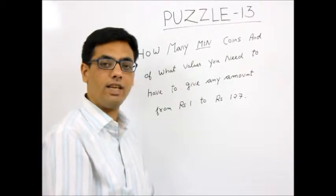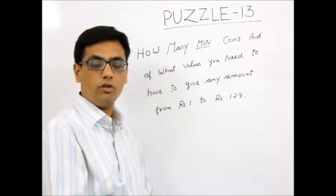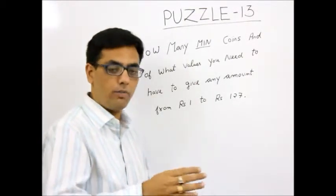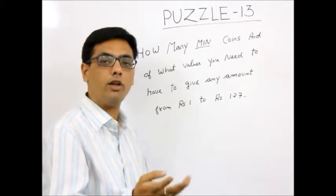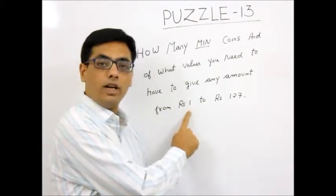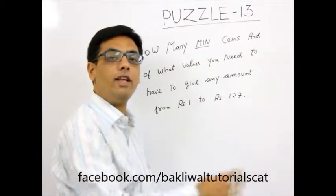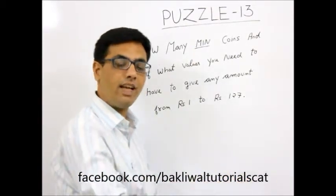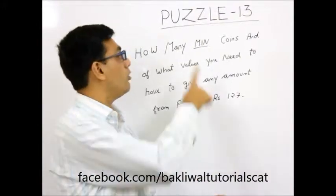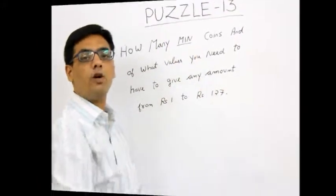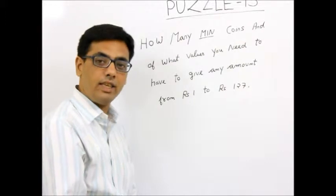So if someone comes to you and asks, give me 63 rupees, you should be able to pay the exact amount based on the number of coins and the values that you are having. So from any integer amount from rupees 1 to rupees 127, any number between them, you should be able to give exactly with the coins you are having. So what is that minimum number of coins and of what values? Let's look at the explanation.